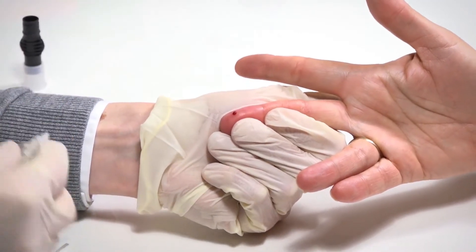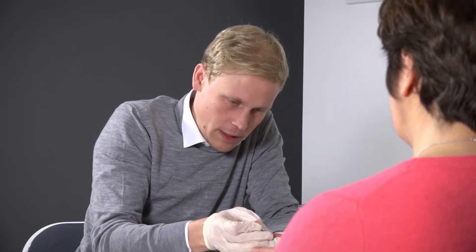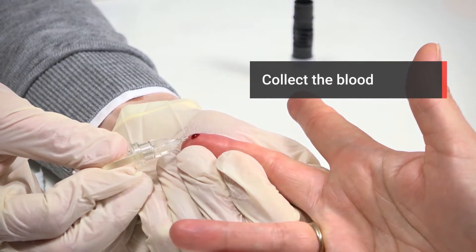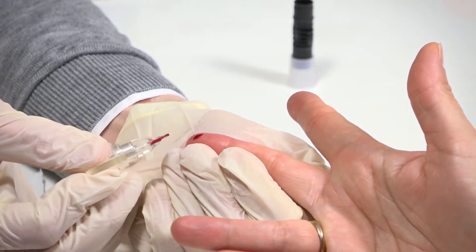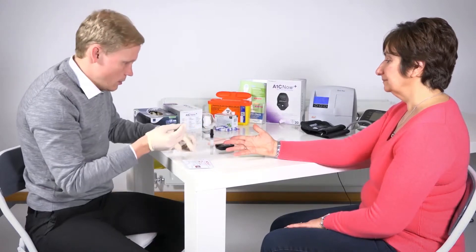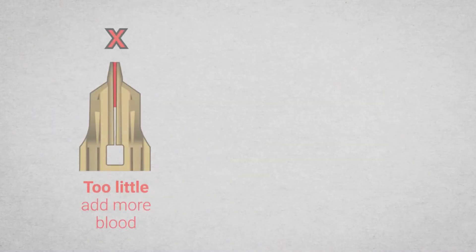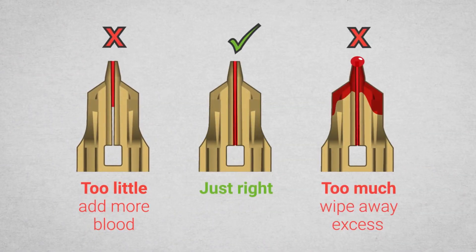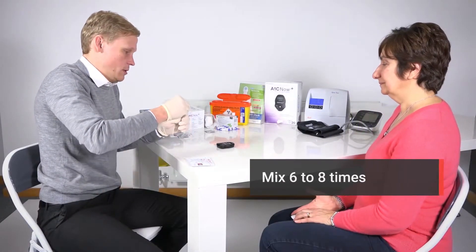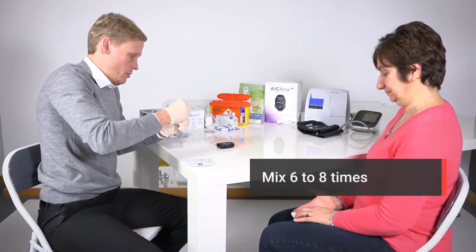Apply pressure along the finger, but don't press near the puncture site as this may affect the sample. Collect the blood by touching the tip of the blood collector into the blood drop — do not smudge the blood or try to scoop it up. Give some gauze to the patient and ask them to firmly apply pressure to stop the bleeding. Ensure you have collected the correct amount of blood sample.